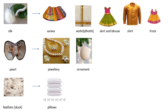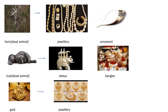We make jewellery and ornaments from pearl. We use duck feathers to make pillows. We use dead animals' tusks and horns to make jewellery, ornaments, statues and ornamental objects.